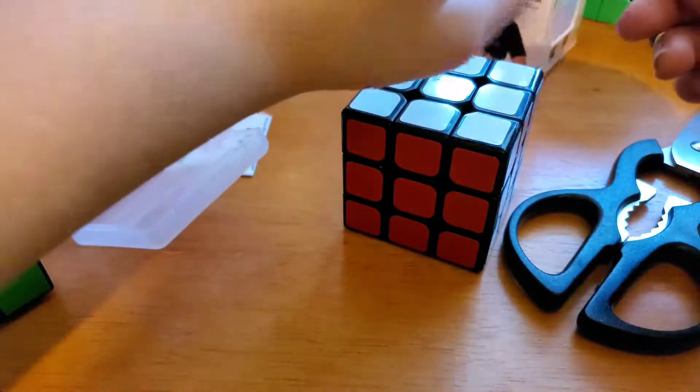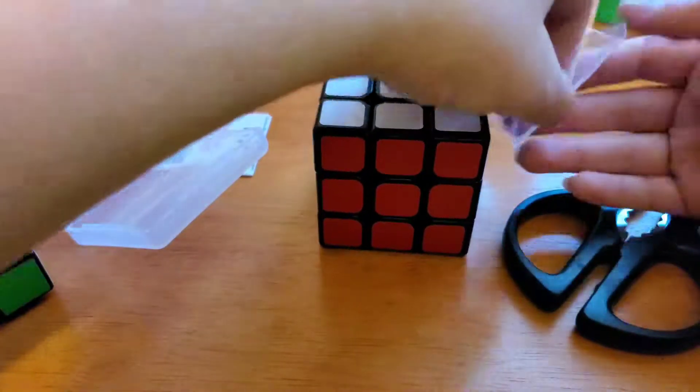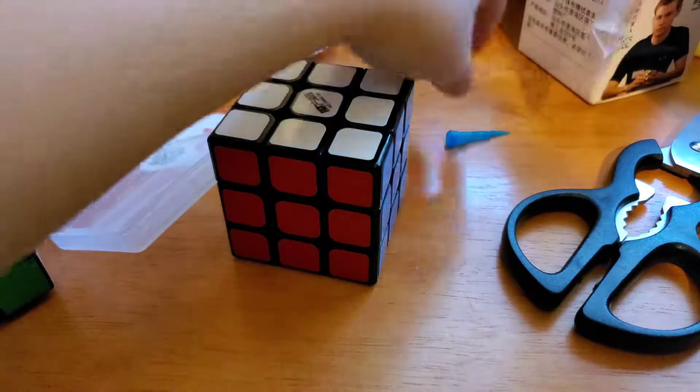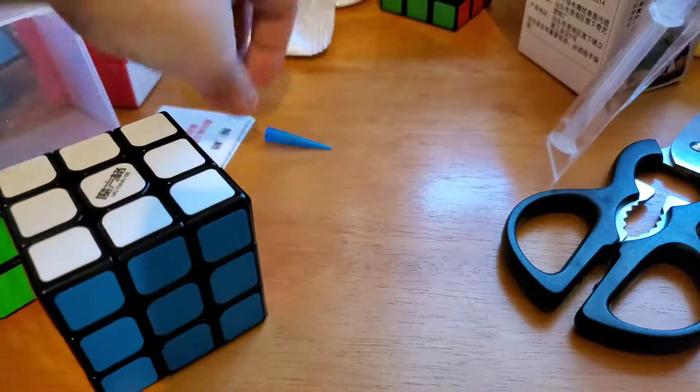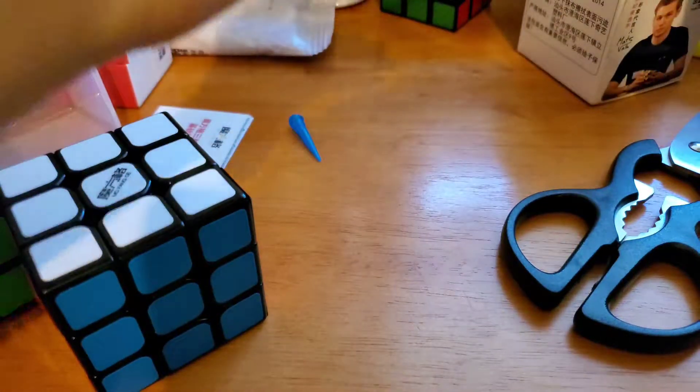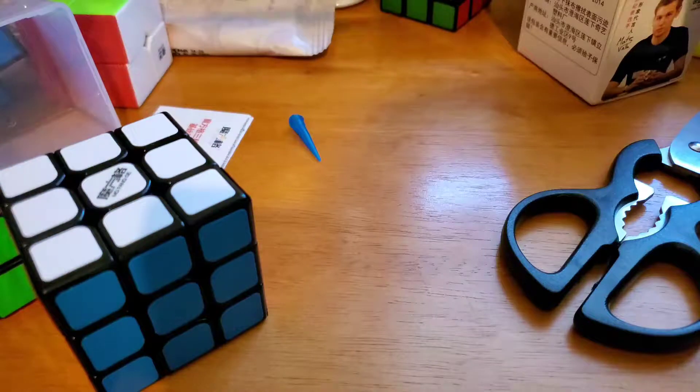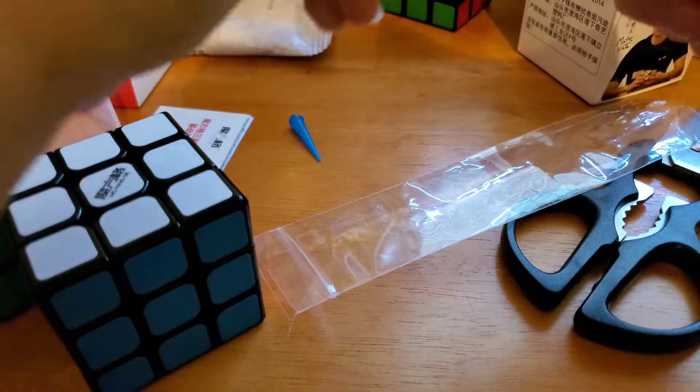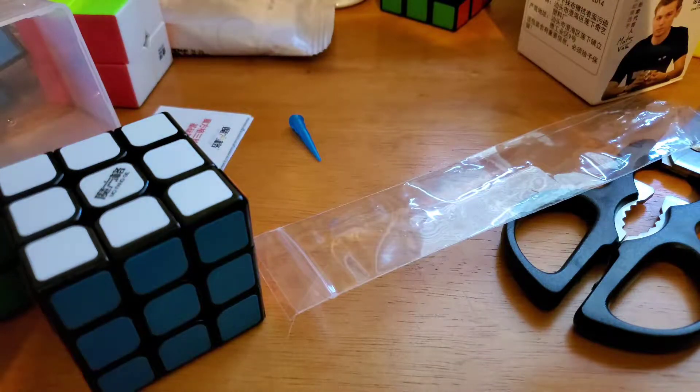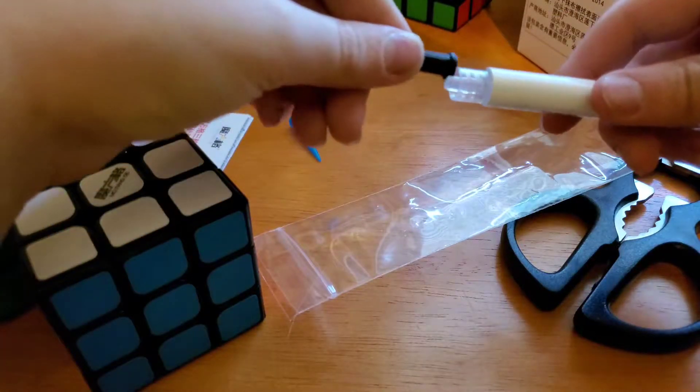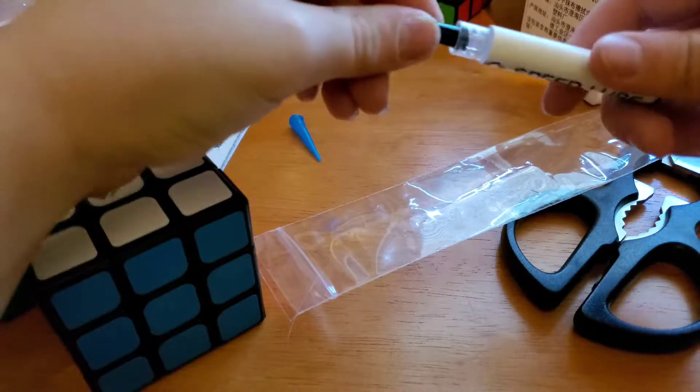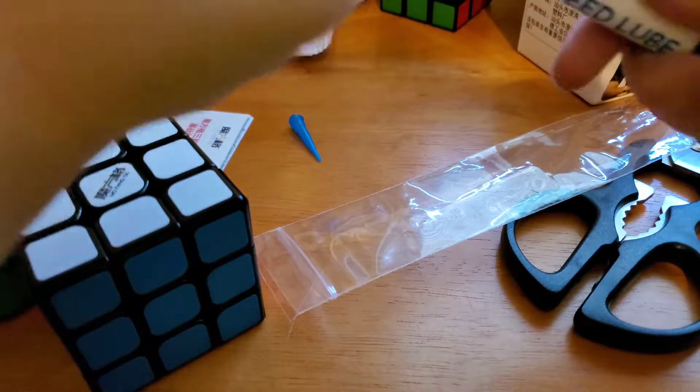Let's just open up the lube. Cause why not. So you have the blue dispensing tip. Then just your little syringe. A little cap. And that's how it goes. So then you just put the blue tip on and lube your puzzle.